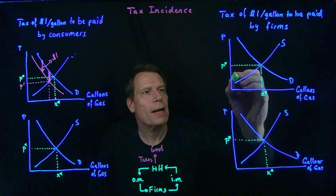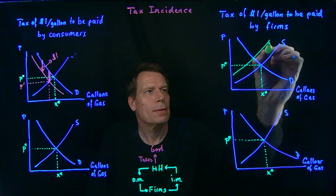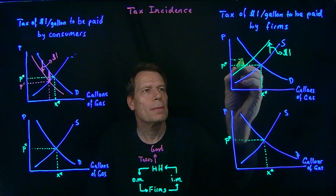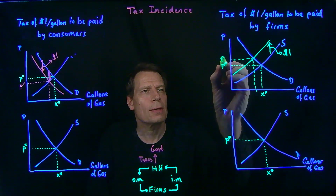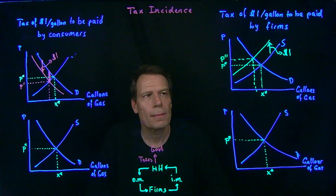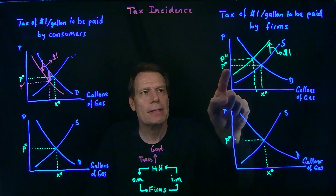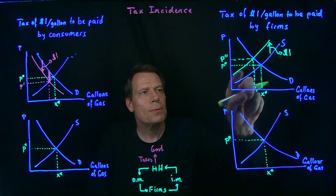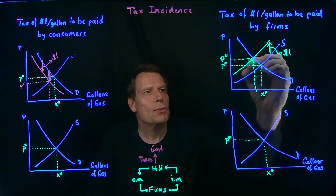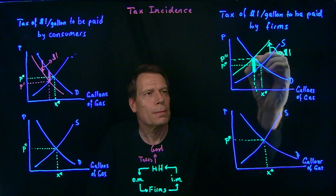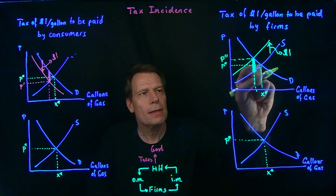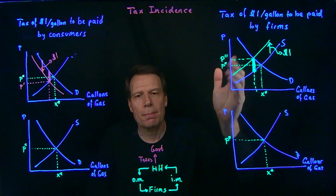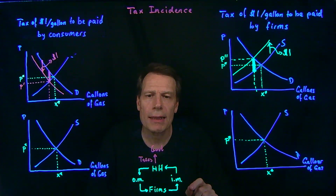Shifting up the market supply curve by a dollar takes us to a new equilibrium with a lower quantity and a higher price — let's call that price P double prime. Is that price higher by a dollar? We can see the answer in the picture: the difference between the two supply curves is exactly one dollar. If that distance is a dollar, then the distance that lies above P* is less than a dollar. So this shift in the supply curve causes the equilibrium price to rise, but by less than a dollar.